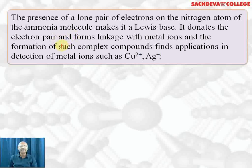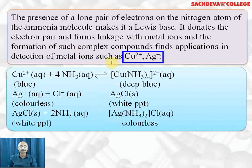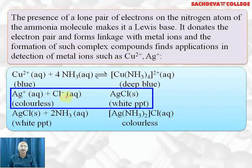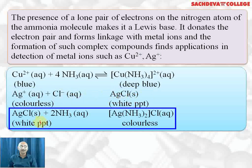That is why ammonia acts as a good ligand and forms complexes with copper ions and silver ions. Copper ion reacts with ammonia to form the cuprammine complex, or copper-ammonia complex, which is deep blue in color. Silver ion reacts with chloride ion to form a white precipitate of AgCl. AgCl dissolves in ammonia forming a soluble complex [Ag(NH₃)₂]⁺Cl⁻, which is colorless and soluble in water.